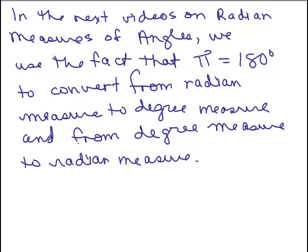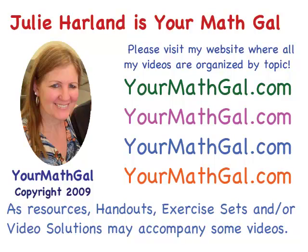In the next videos on radian measures of angles, we use the fact that π equals 180 degrees to convert from radian measure to degree measure and from degree measure to radian measure. This is YourMathGal, Julie Harland. Please visit my website at yourmathgal.com where all of my videos are organized by topic.